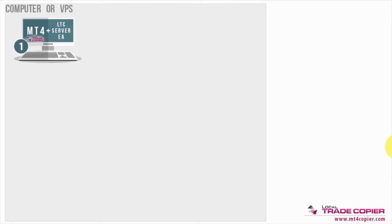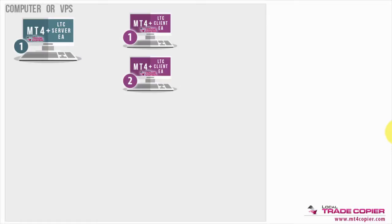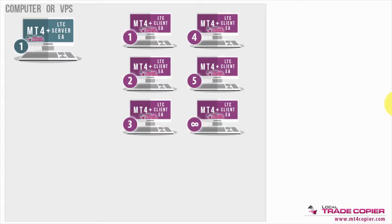Let's say you have a computer and you get your MetaTrader account. You install the Local Trade Copper — specifically the server EA, which is the first component of the software. It needs to be installed on all the MetaTrader accounts you want to act as a master. So for now we have one MetaTrader account and we want it to act as a master account. It's just a regular MetaTrader that everyone gets from their brokers — and there are hundreds of brokers that offer MetaTrader. You install the server EA on that master, and then on the same computer you install other MetaTrader accounts with the second component called the client EA. Local Trade Copper consists of those two components.